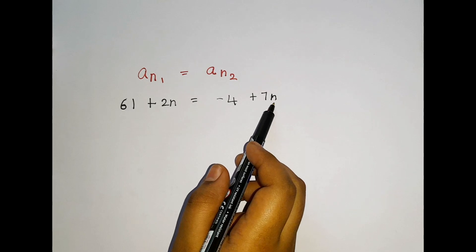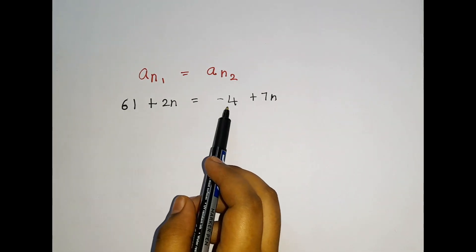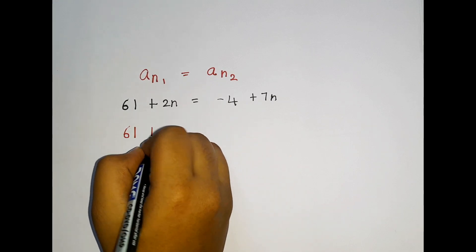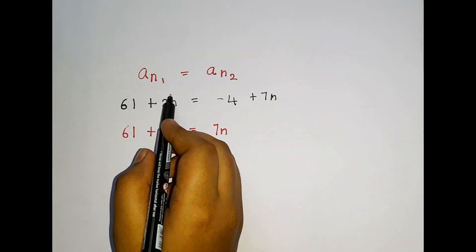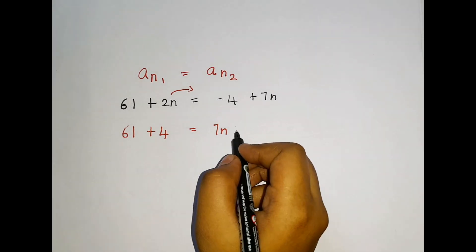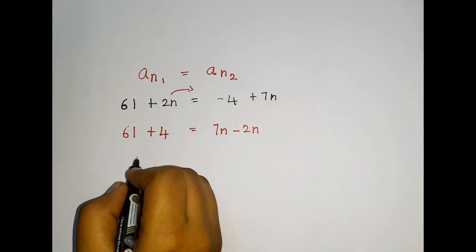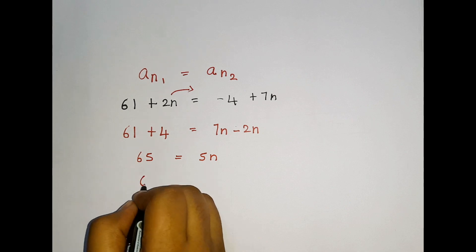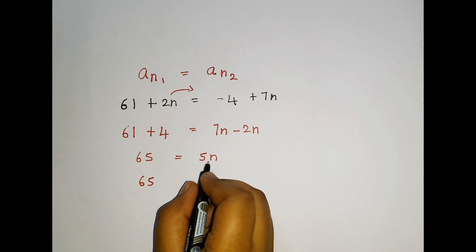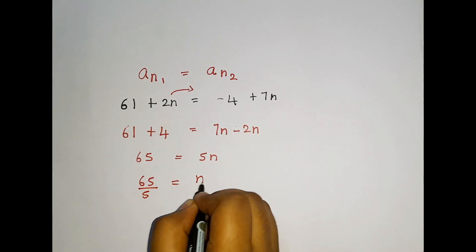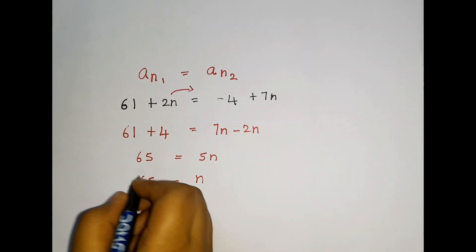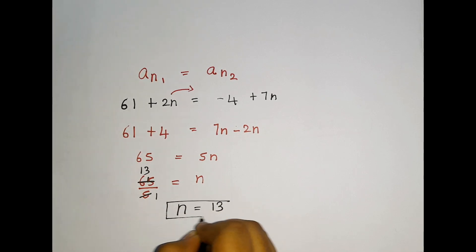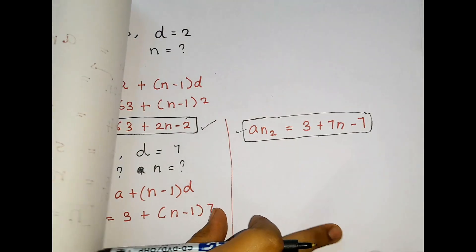We have 61 + 2n = −4 + 7n. Getting the constants together: 61 + 4 = 65. Getting the n terms together: 7n − 2n = 5n. So 65 = 5n. Since 5 is in multiplication, dividing both sides: 65 ÷ 5 = 13. So the n value is 13.